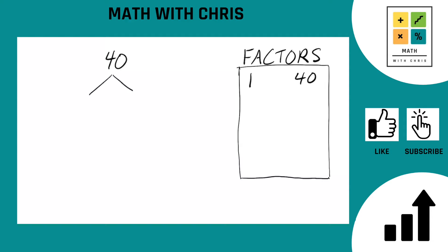Alright, branch this guy out. What two numbers multiply together to give us 40? A bunch of options we could go with. I'm going to go with 4 times 10. That seems like a pretty straightforward one.